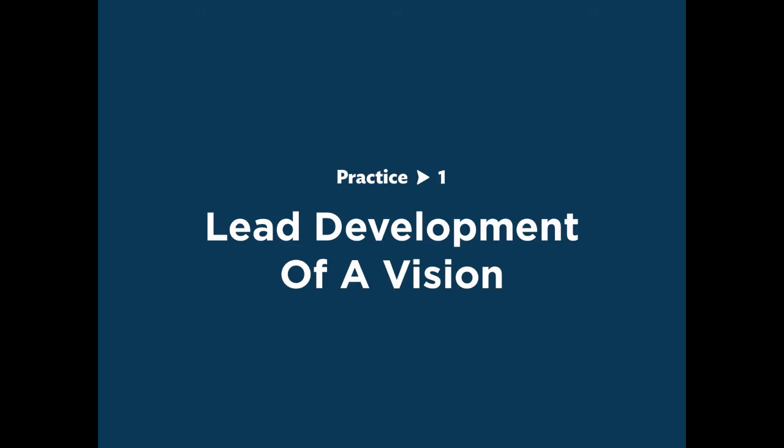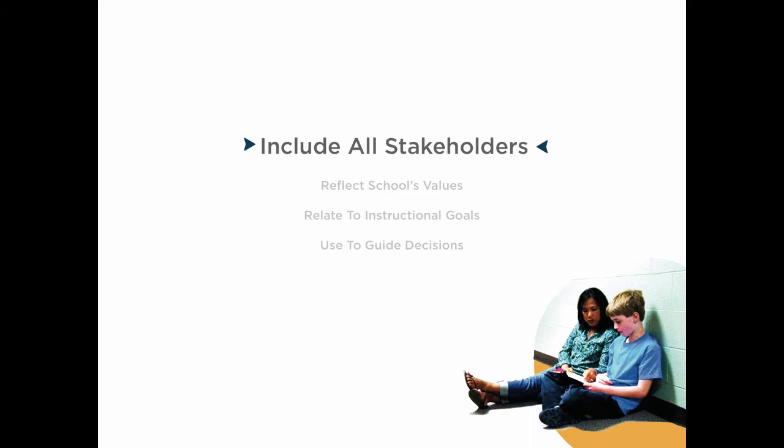Let's look at the steps for how site leaders can lead development of a clear vision. It's important for building leaders to include all stakeholders in the process of developing a clear vision. Consider ways to incorporate family, community, and student input. Perhaps have stakeholders vote on what goals they value. Work to ensure that all stakeholders, particularly traditionally marginalized stakeholders, are included in the educational process. And ask, what might keep some stakeholders from participating?